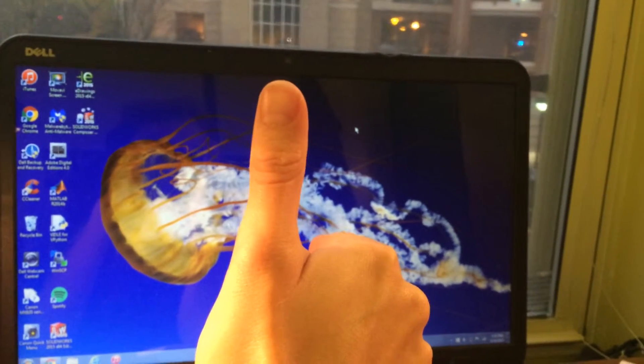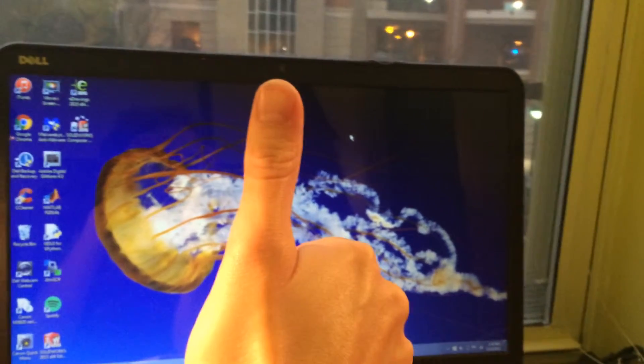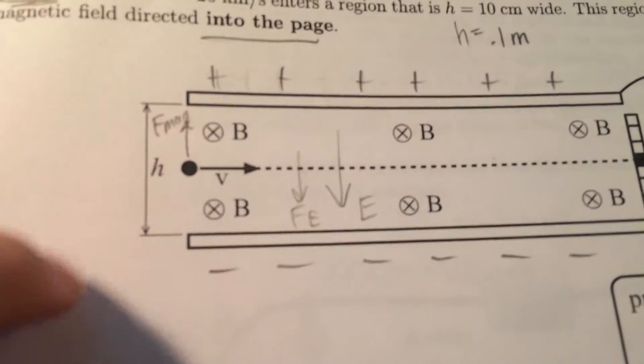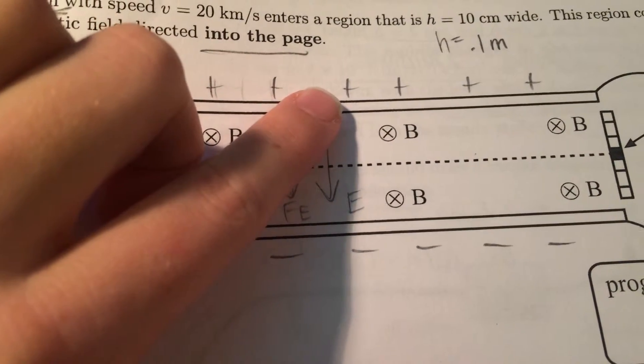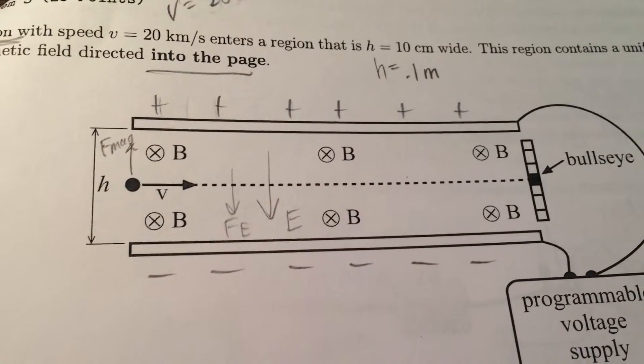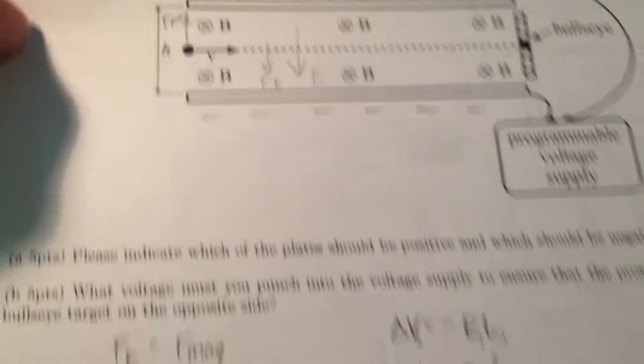And that means the magnetic force points upwards, which is in the direction of your thumb. So since the particle is a proton and it's forced upward by the magnetic force, the top plate becomes positively charged and the bottom plate becomes negatively charged.